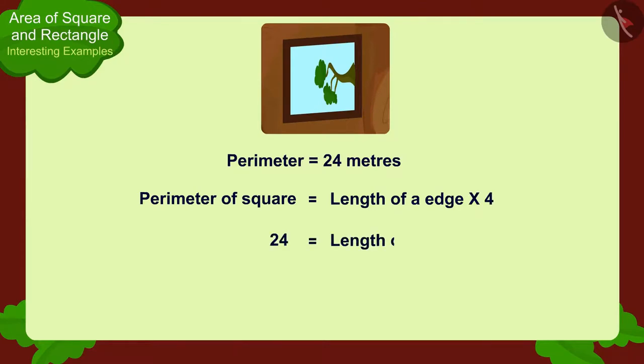In this way, we can find the length of any of the edges of the window as six meters.